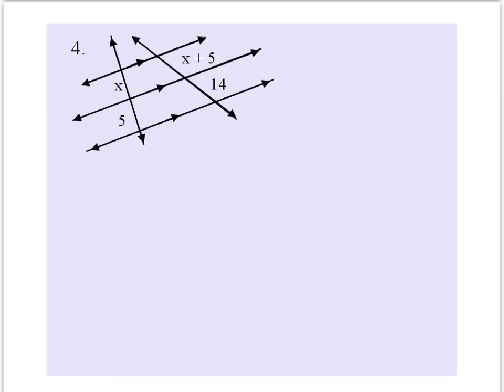This next problem deals with the second theorem on the front page of your note sheet. So we have x and x plus 5 are split up, and 5 and 14 create the final proportions.